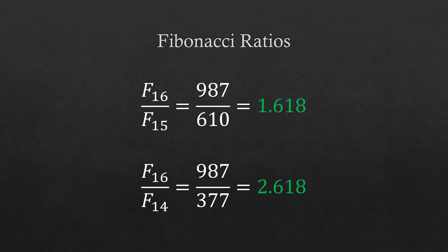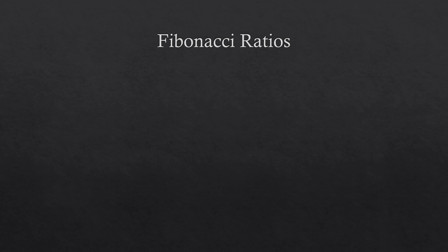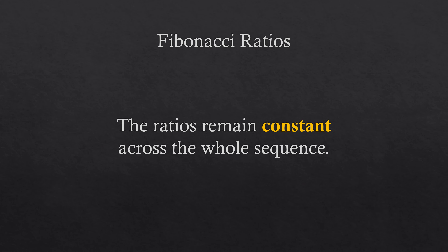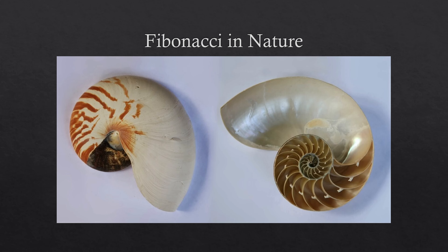This works for the entire Fibonacci series, except for the first terms. That's what's special about these ratios — they are constant across the whole sequence. Fibonacci ratios can be found across nature, like in the Nautilus shell, the shape of hurricanes, and so on. Most traders already know this, since Fibonacci ratios have become widely famous in the retail trading domain.